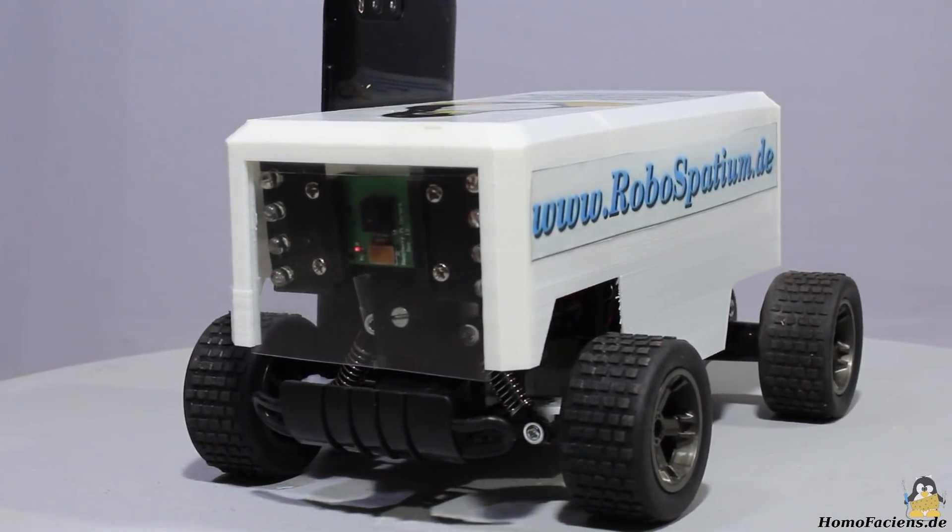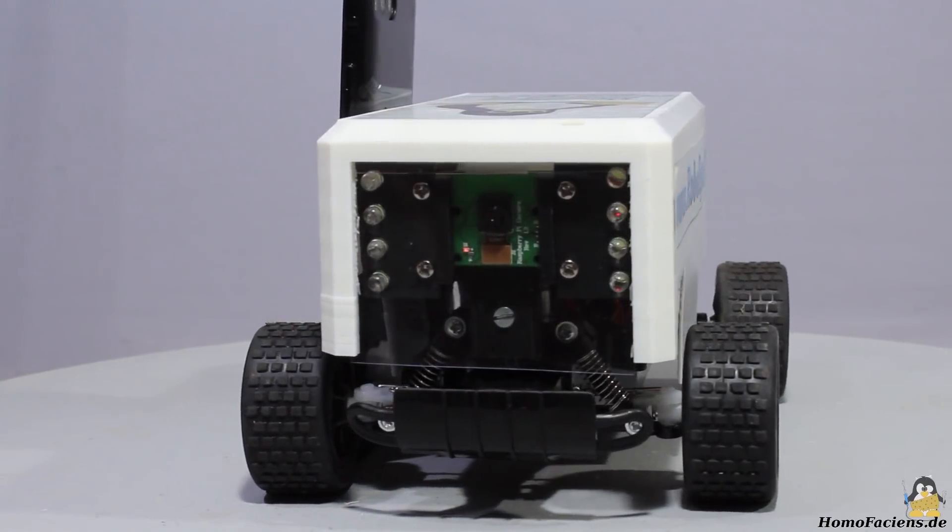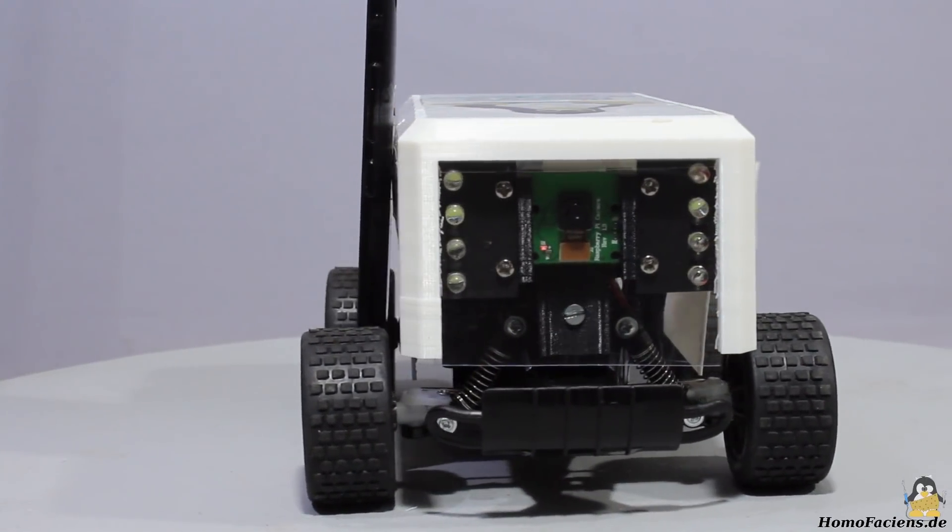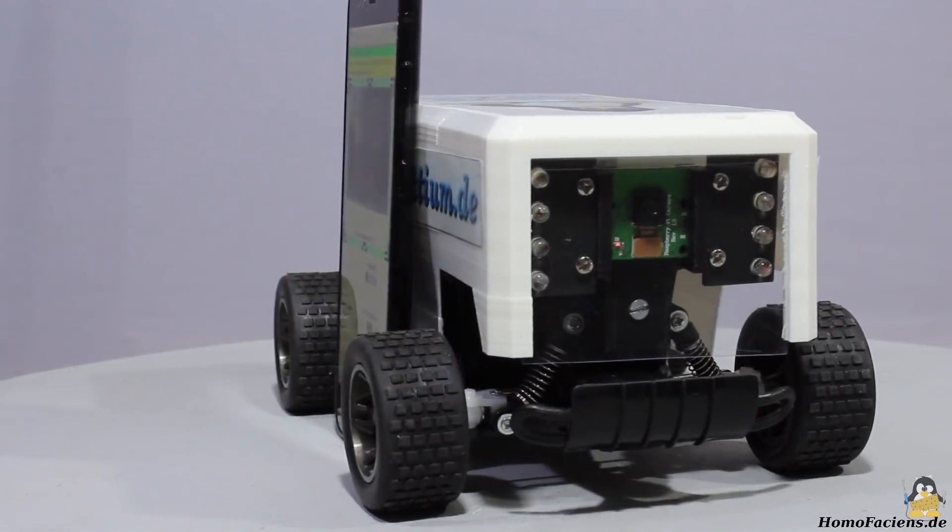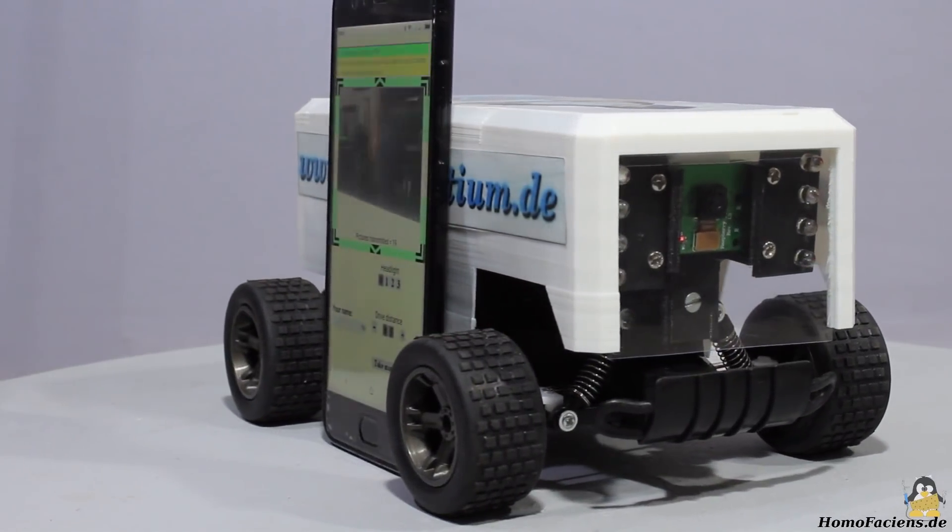A cover protects the electronics from rain if you go for outdoor missions. It's 3D printed as well and the box shaped bodywork has lots of space for stickers.